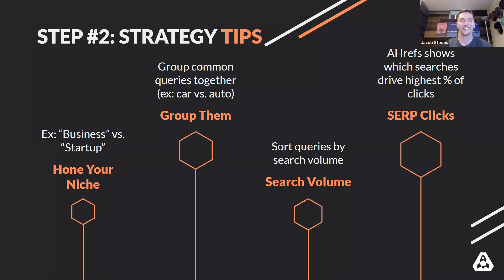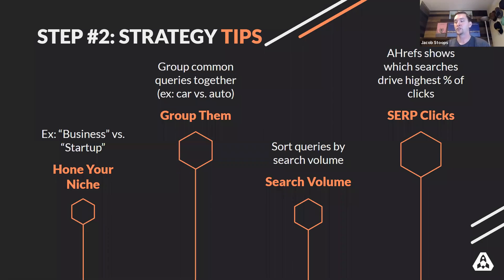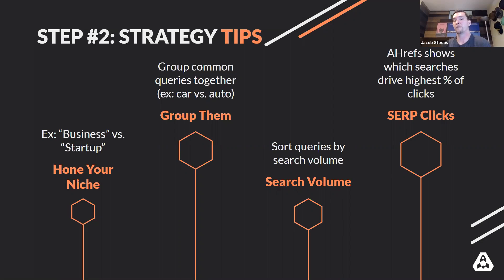One other thing outside of search volume: in this day and age, certain SERP layouts lend themselves better to clicks than others, and certain types of search result pages have features that distract from traditional organic. So one KPI I would recommend pulling in as you're doing your research would be not just search volume, but looking at queries that get a high percentage of clicks from that search volume. A keyword that gets a thousand searches but only 20% of searches get a click is probably a lot less valuable than a query with maybe 500 searches where 80 or 90% of those searches get a click.